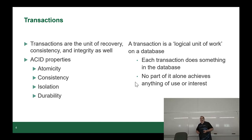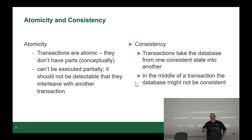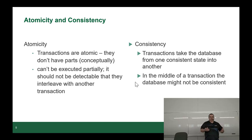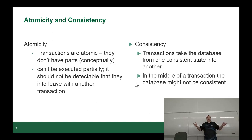There are four properties: Atomicity, Consistency, Isolation, and Durability — the acronym is ACID. Atomicity means transactions are atomic; they don't have parts in concept. They can't be executed partially, and it should not be detectable that they interleave with another transaction. One transaction that is occurring is invisible to everything else because the entirety of it is considered one single operation, even if there are multiple steps. It can't be visually seen from the outside, and from inside, it can't see outside either. You can have dozens of transactions running in parallel.